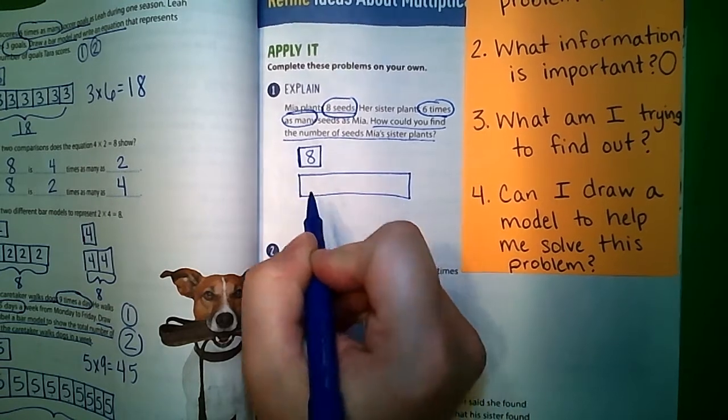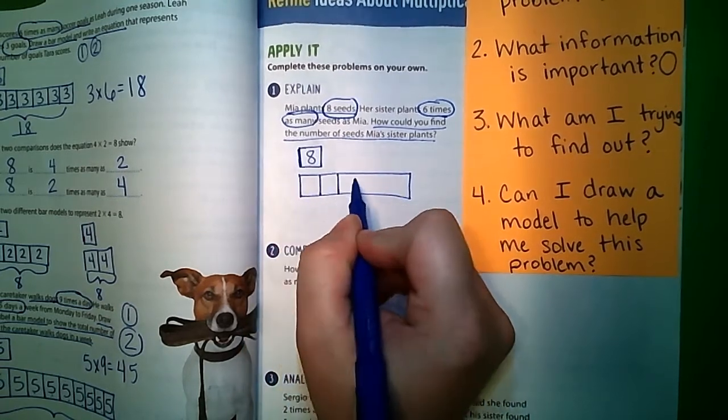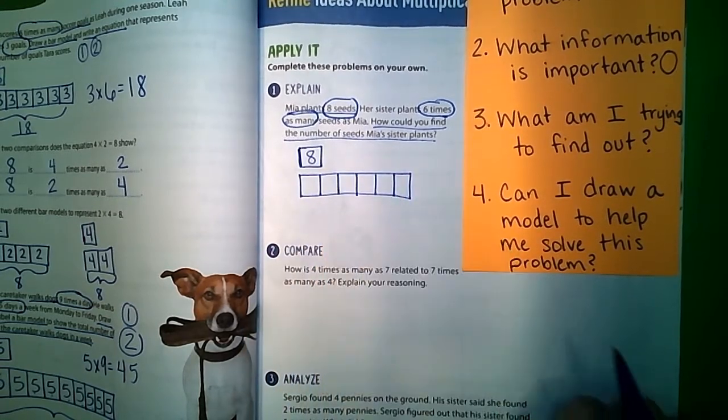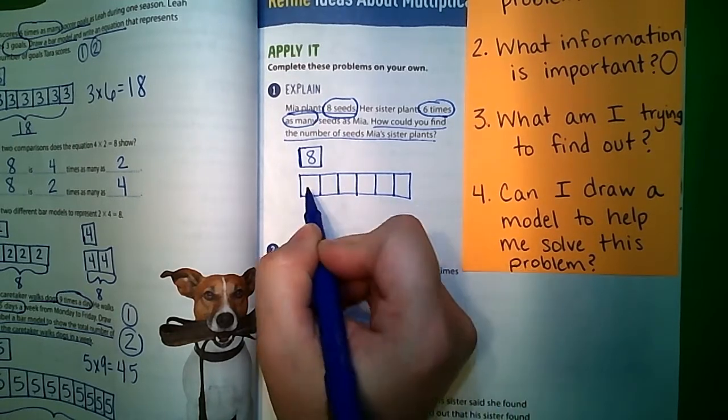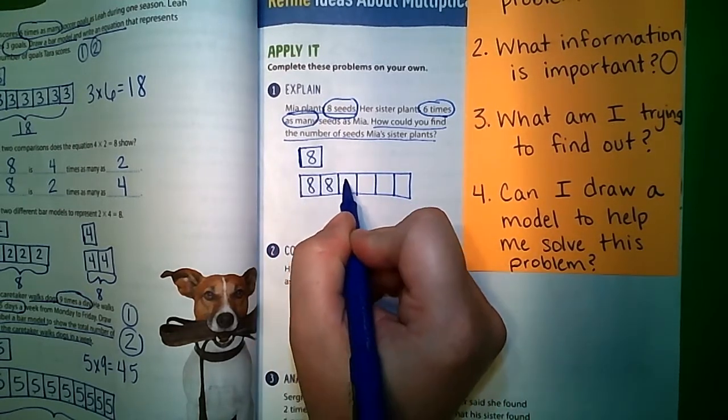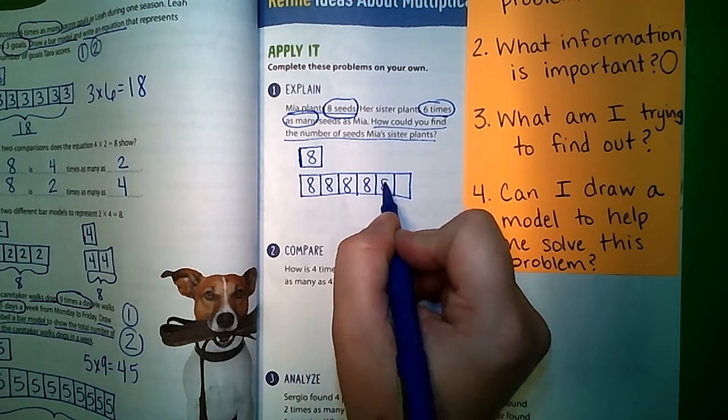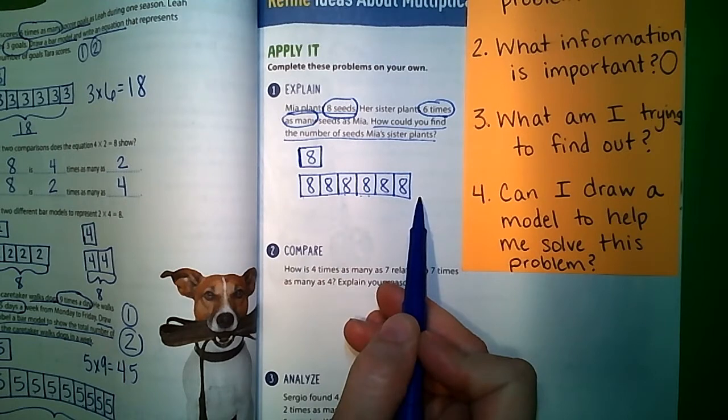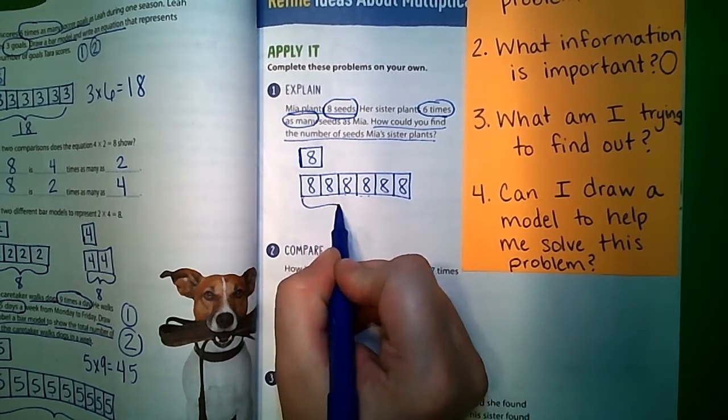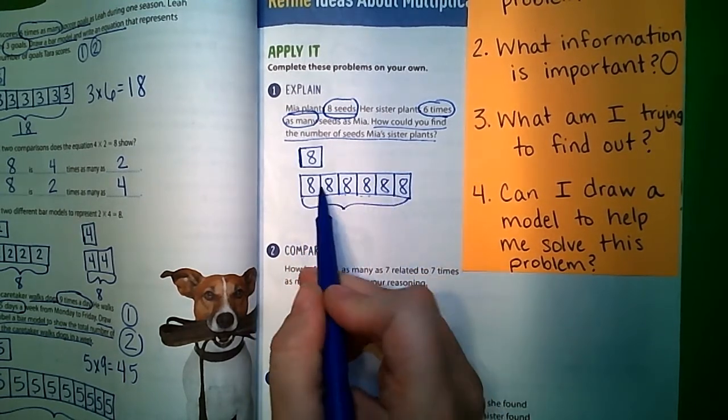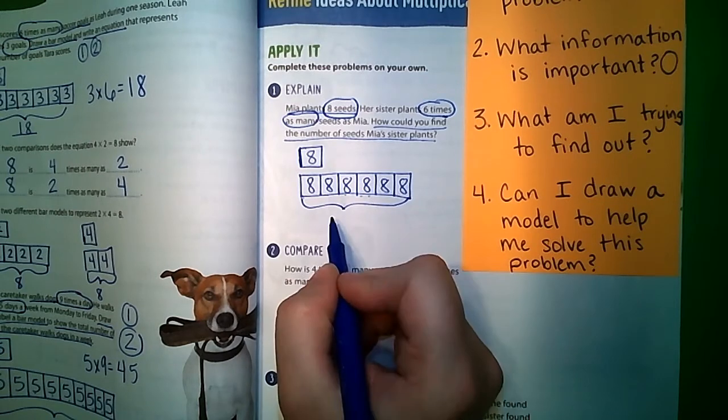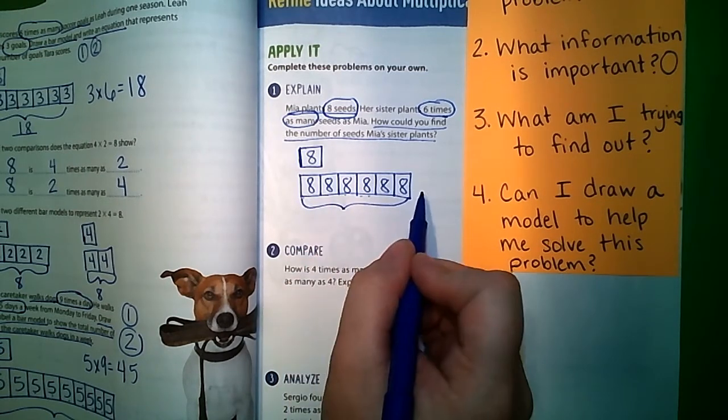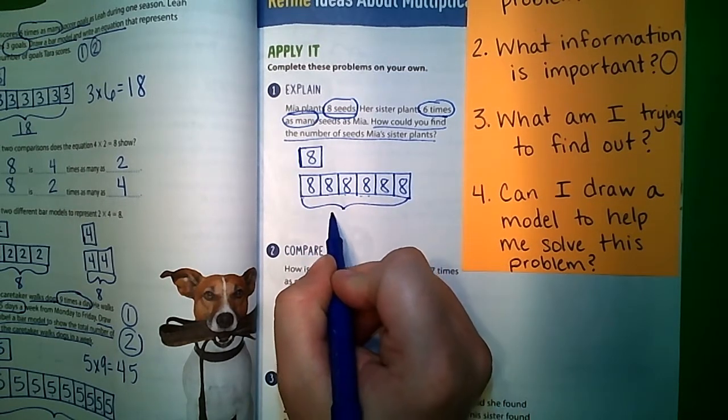So we're going to draw a model for her sister: four, five, six. And so that's six times. We're going to put this eight in there each time. We can skip count by eights or add these eights together, or if you know your multiplication facts, you know that eight six times is your multiplication fact. So six times eight is...